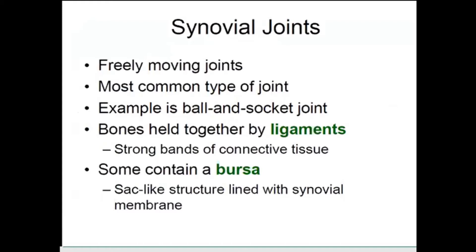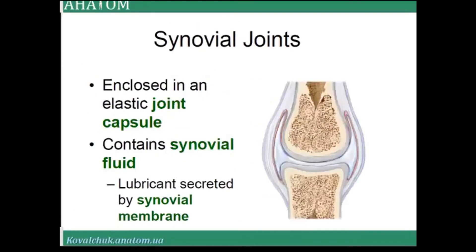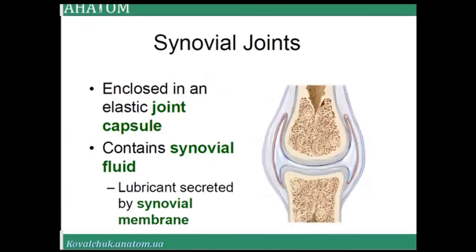Bones are held together by ligaments — strong bands of connective tissue. Some joints contain a bursa, a sac-like structure lined with synovial membrane. Synovial joints are enclosed in an elastic joint capsule and contain synovial fluid, a lubricant created by the synovial membrane.